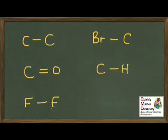Our knowledge of electronegativity should now allow us to decide whether a covalent bond is polar or non-polar. We'll go through a selection one by one. Starting with the C-C bond: the two atoms are the same as each other, so it's impossible for there to be a significant difference in electronegativity, and the electrons in the bond will be equally shared. No delta-minus or delta-plus — this is a non-polar bond.